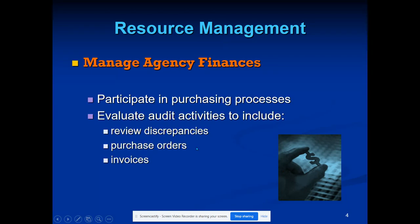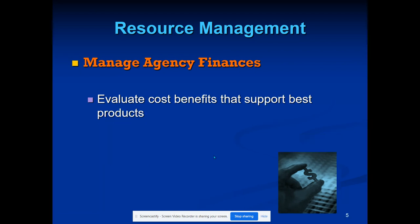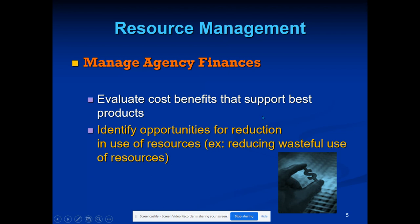Managing agency finances comes first — whether you're part of the purchasing process, auditing your orders, your invoices, any discrepancies. When reviewing your finances, a big one is to evaluate cost-benefit to support the best products. Cheaper isn't always better. For example, I switched the vitamin C I was buying because I found a cheaper brand, but it was 500 milligrams instead of 1000, so I had to take two — it was not actually cheaper.